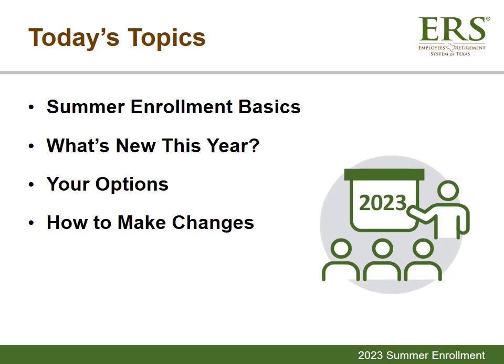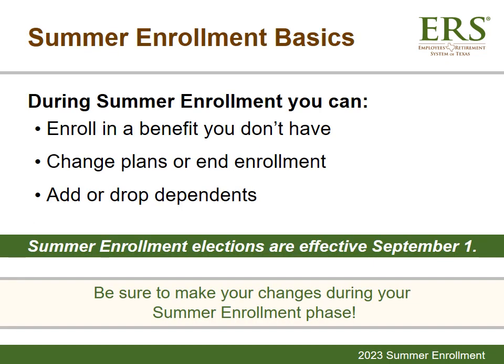If you receive the Retirees and Family Summer Enrollment Guide, your page numbers will differ, but the same information is still available. Summer Enrollment is your chance to make benefit changes without a qualifying life event. During Summer Enrollment, you can enroll in a benefit you don't currently have. Some optional coverage requires evidence of insurability, and approval is not guaranteed. We'll discuss those benefit options a little later in the presentation.